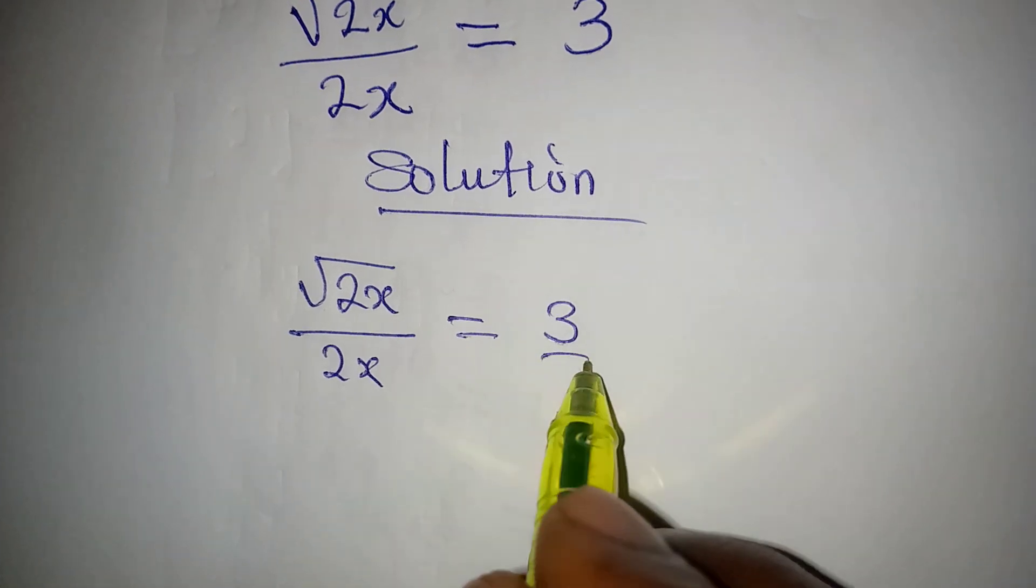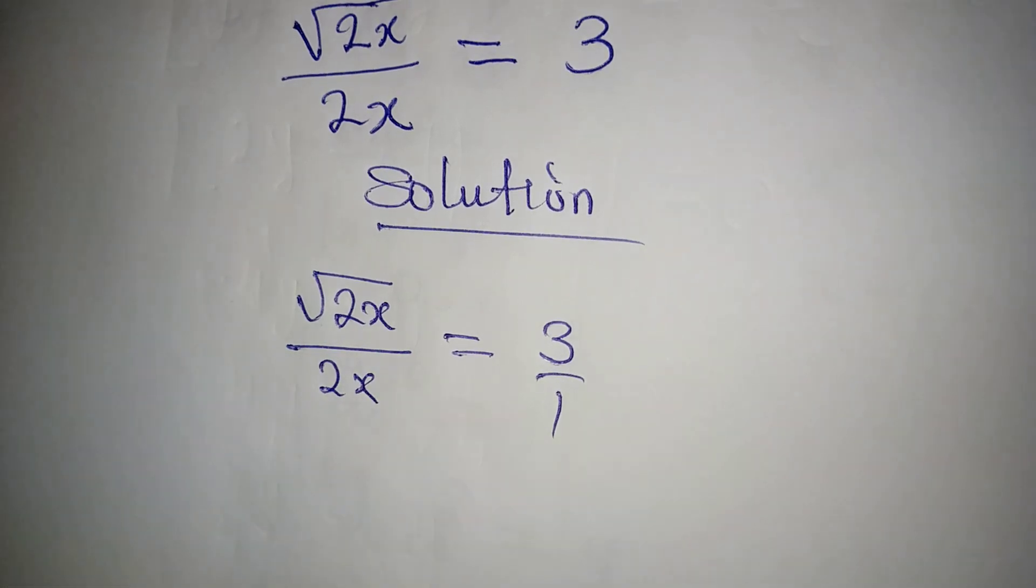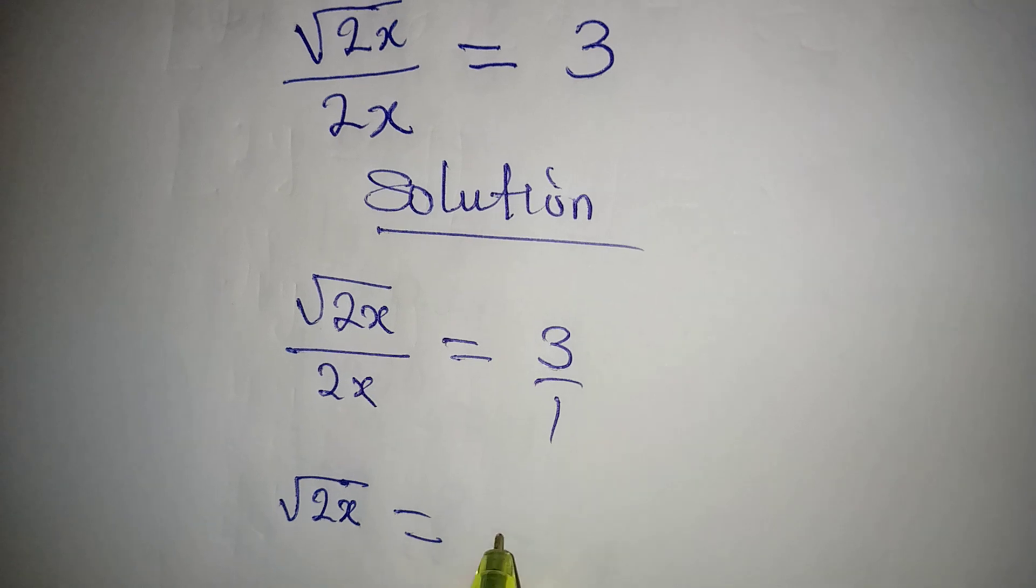So what we are to do is to cross multiply, because this is over 1. Root 2x times 1 will give root 2x, and this is equal to 3.